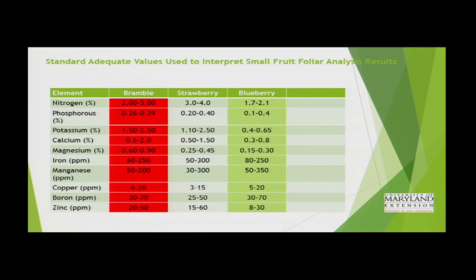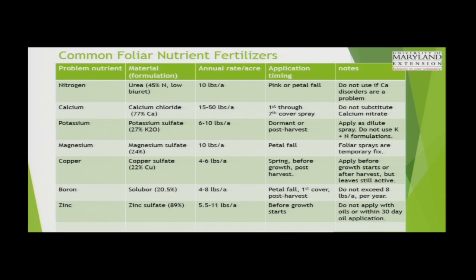Here are some common foliar nutrient fertilizers. The normal rate per acre is not per application — this is what we shoot for over the course of the whole season. For nitrogen on apples, pink or petal fall is the time to apply using urea. When you go to buy nutrients, depending on where you buy them, always make sure the label says it's a plant food for foliar application. The biuret form of urea is actually an animal feed supplement — you don't want to use that as a foliar fertilizer. Calcium chloride is commonly used and is applied quite a bit in apples and pears to reduce cork spot, applying 15 to 50 pounds per acre through about seven cover sprays.